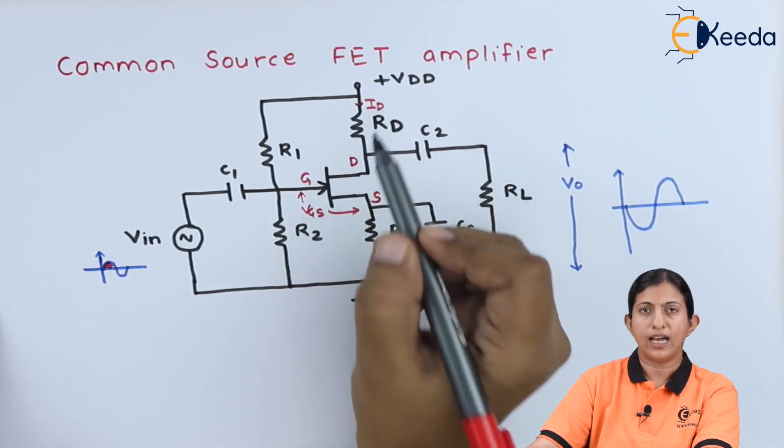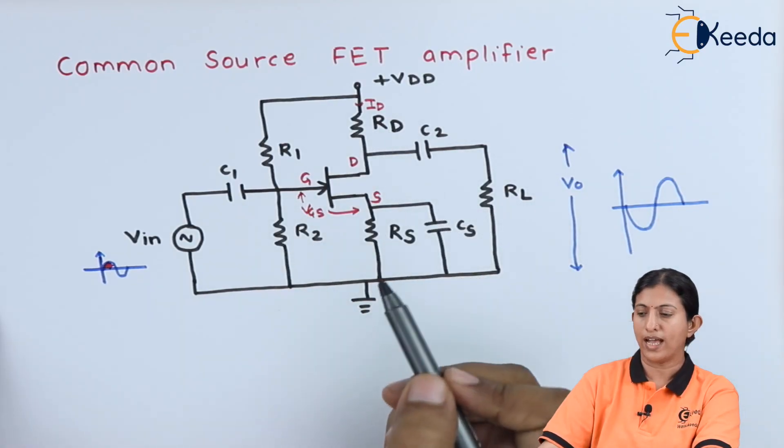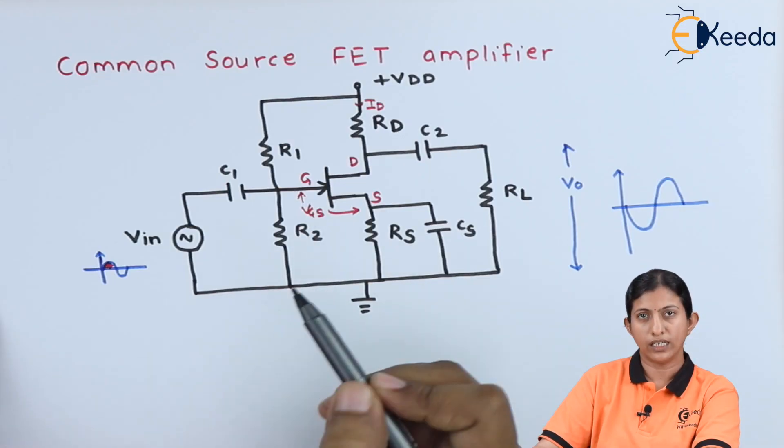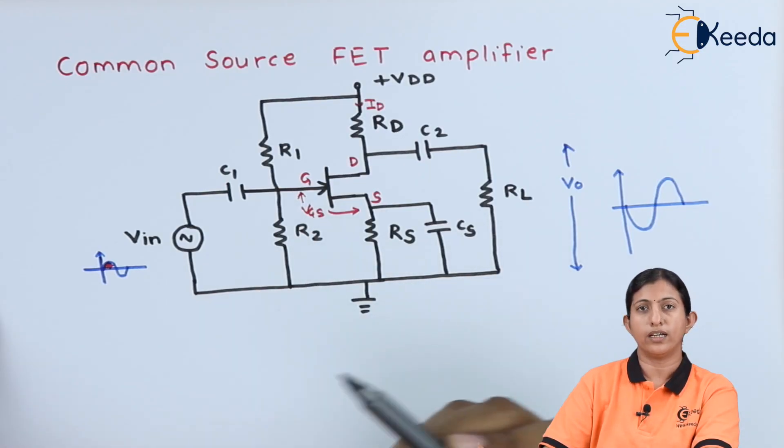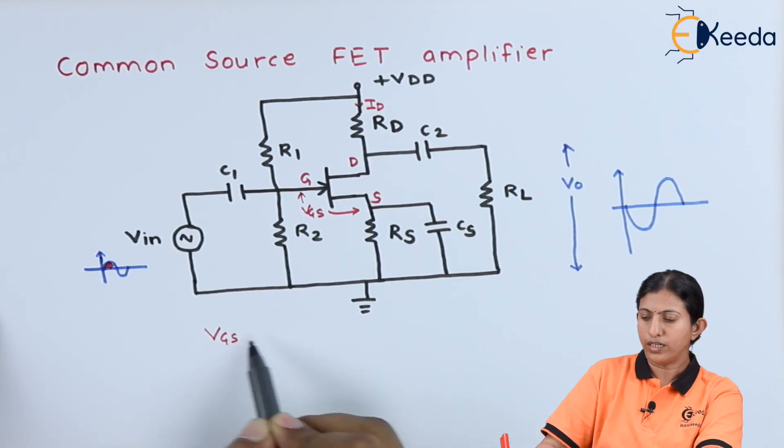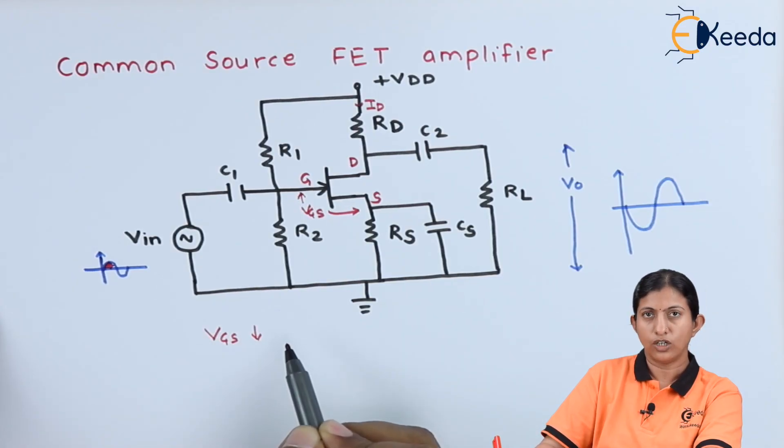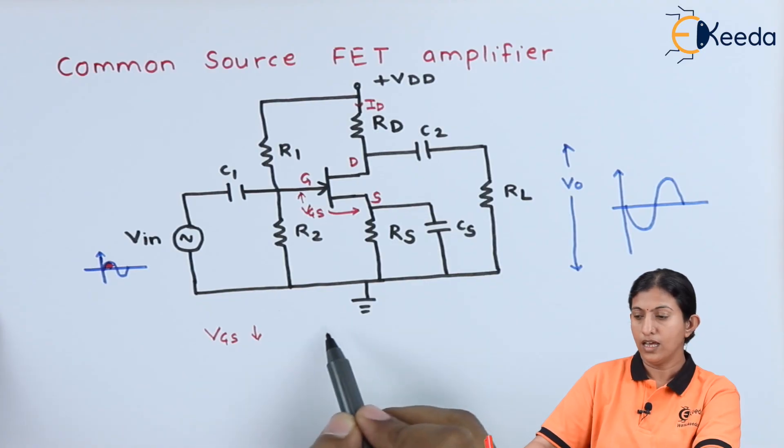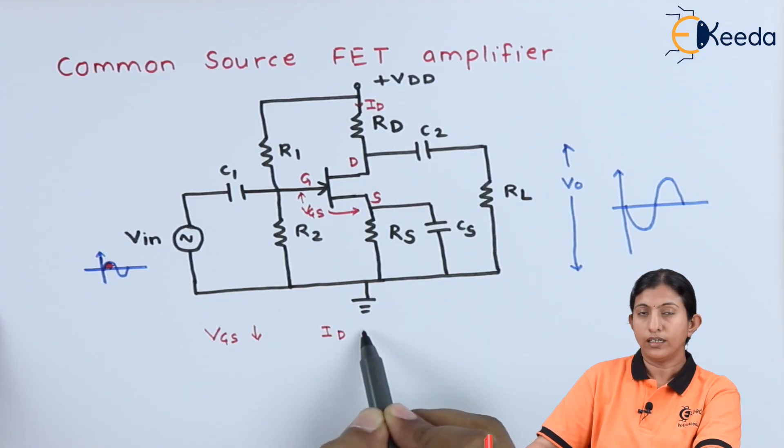VGS and ID are inversely proportional, so as the VGS voltage decreases during the positive half cycle, current ID increases.